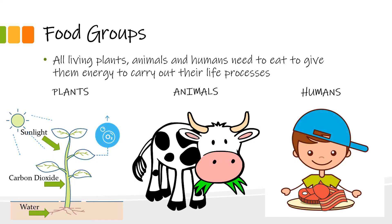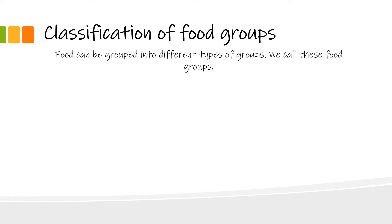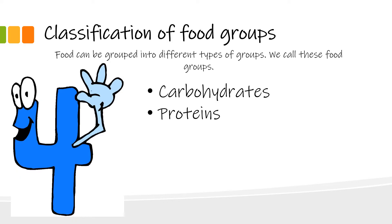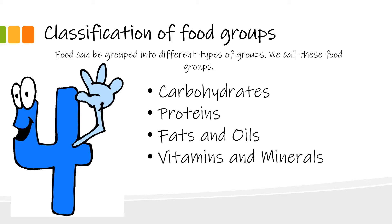Humans are the same — they also have to eat plants or animal products to get energy to grow and develop. The food we eat can be grouped or classified into different types or groups, called the food groups. There are four main groups: carbohydrates, proteins, fats and oils, and lastly vitamins and minerals.